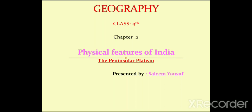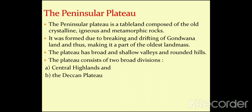Assalamu alaikum dear students. We are studying Geography Class 9th, Chapter 2 - Physical Features of India. Today's topic is the Peninsular Plateau. In previous lectures we studied the Himalayas and northern plains. A peninsula is a piece of land surrounded by water on three sides. A plateau is the height that lies between plains and mountains.